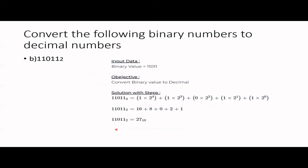Next: 11011. Write the weighting factors: 2⁰, 2¹, 2², 2³, 2⁴. Here only one 0 is present, so most digits need calculation: 1 × 1, 1 × 2, skip the 0, 1 × 8, 1 × 16. Add them all and you get 27.